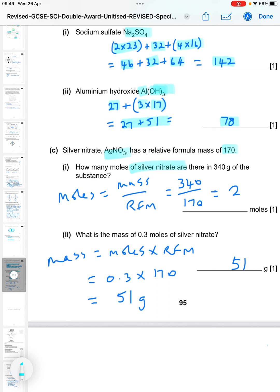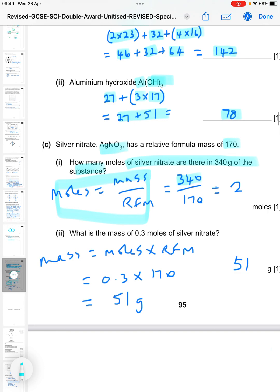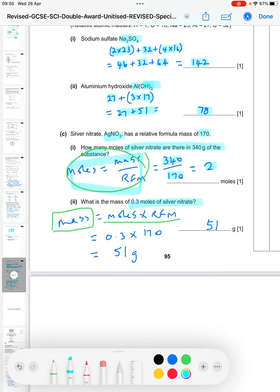And it says silver nitrate, AgNO3, has a relative formula mass of 170. How many moles of silver nitrate are there in 340 grams of the substance? So the number of moles is the mass divided by the formula mass. The mass is 340, the formula mass is 170, so the answer there is two - so two moles. And what's the mass of 0.3 moles of silver nitrate? So rearranging this formula, the moles is the mass divided by the formula mass. We take the mass, then it's the term we want. It's the moles times the formula mass. So 0.3 from the question times 170 from the previous question is 51 grams.